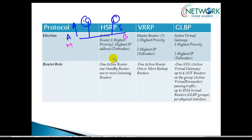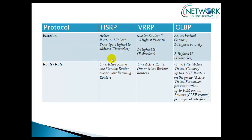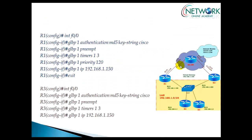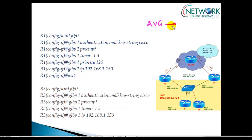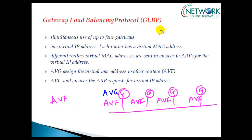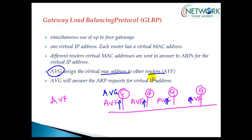The key difference is that AVG and AVF are both actively forwarding traffic. Every router will be an AVF — an Active Virtual Forwarder — meaning every router is going to forward traffic. However, there is one router controlling all the AVFs, and that is the AVG. The AVG is the one who assigns virtual MAC addresses to all the other AVFs.